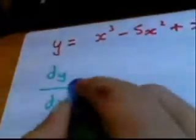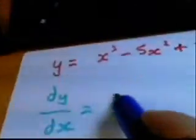So differentiating, all we do is you do them bit by bit. So when you differentiate x cubed you get 3x squared.